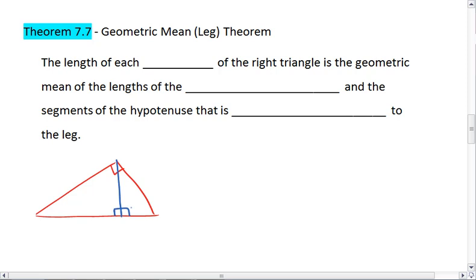What the geometric mean leg theorem tells us is that in this right triangle, the length of each leg of the right triangle, so let's look at one leg at a time, is the geometric mean of the lengths of the hypotenuse and the segments of the hypotenuse that is adjacent to the leg. So if we're looking at this left leg, then this left leg is the geometric mean of the entire hypotenuse plus the part of the hypotenuse that is closest to this leg.